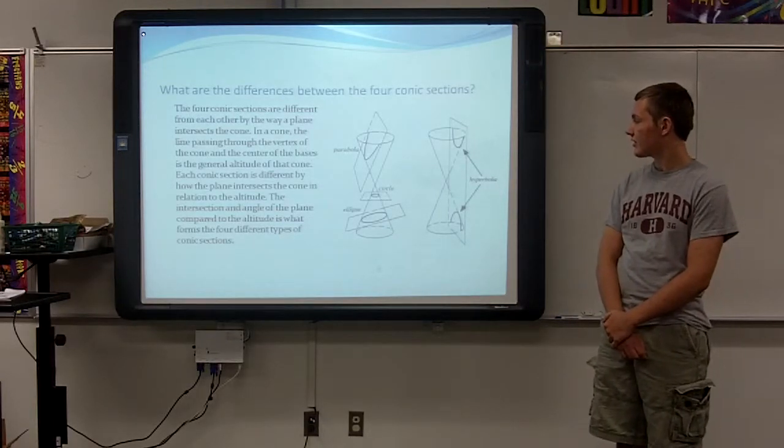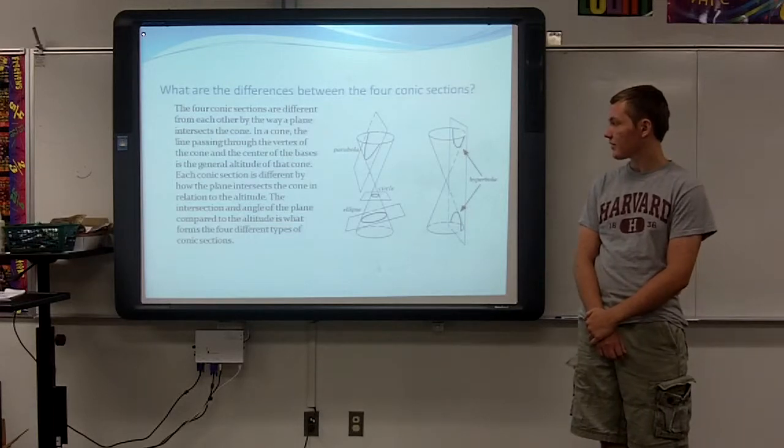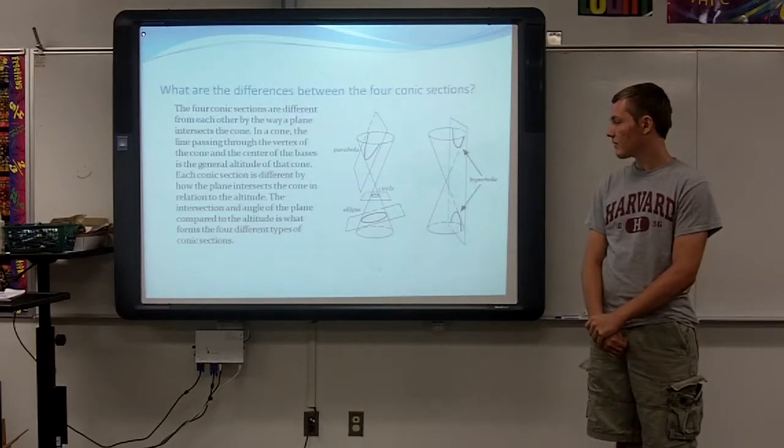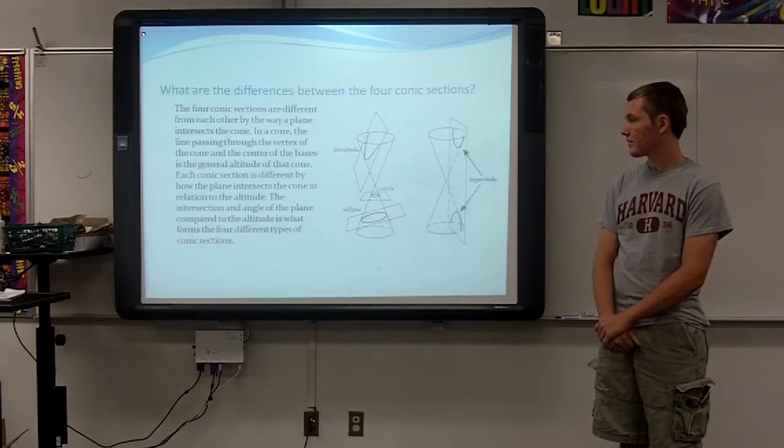Each conic section is different by how the plane intersects the cone in relation to the altitude. The intersection and angle of the plane compared to the altitude is what forms the four different types of conic sections.